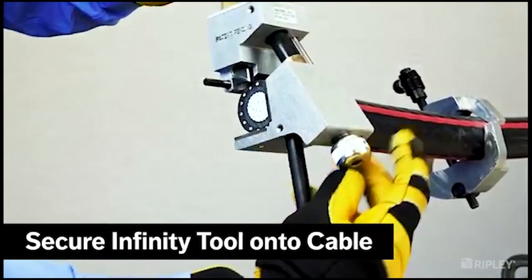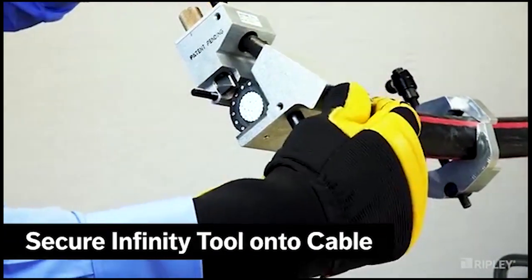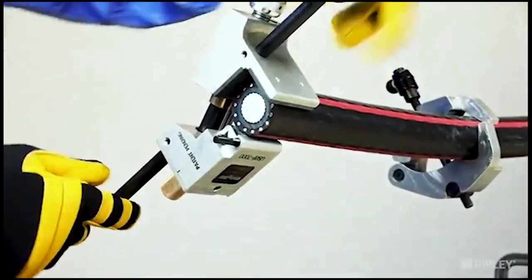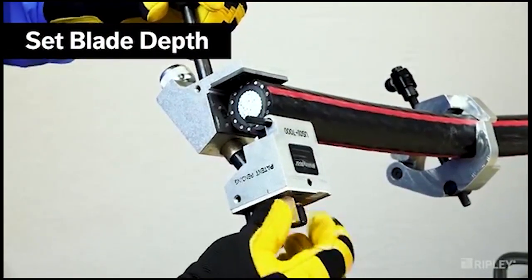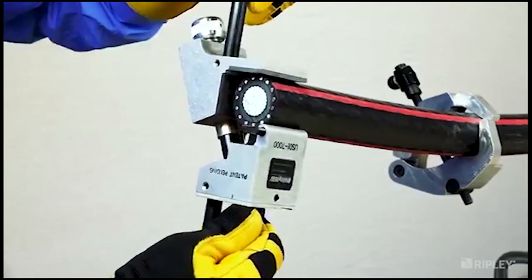Install the tool around the cable with the blade edge overhanging the cable end. Set the blade depth between 15 to 20 thousandths above the concentric wires or metallic shielding.